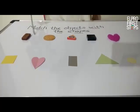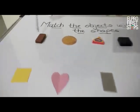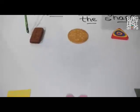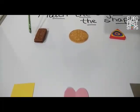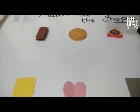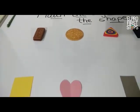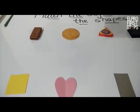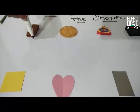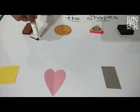Maybe we can draw a line from the object to the matching shape. Now let's see. This is a biscuit and it is in the shape of a... What is the shape? Yes. It is in the shape of a rectangle. So I am going to draw a line from this biscuit to the rectangle. Now where is the rectangle? There it is.